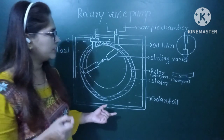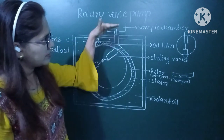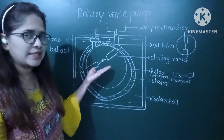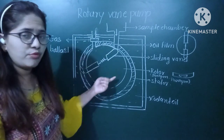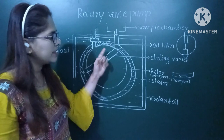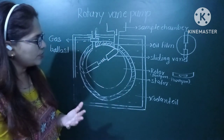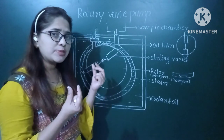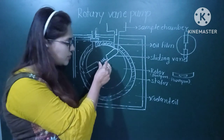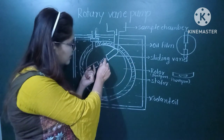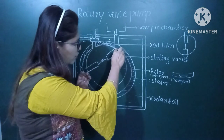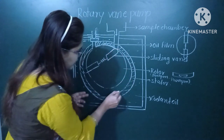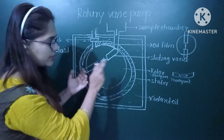Now let us see the working principle. This rotary vane pump is connected to the sample chamber. Initially, the sliding vane is at a certain position. The rotor is kept moving at 800 to 1400 RPMs and the sliding vane keeps on rotating continuously. As the vanes are connected with springs, when the distance is reduced the spring compresses, and when the distance is increased the spring expands. This maintains the contact between the sliding vane and the outer stator, so the vanes are continuously touching the stator.